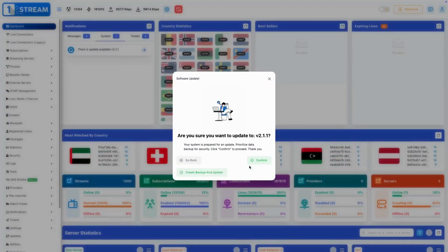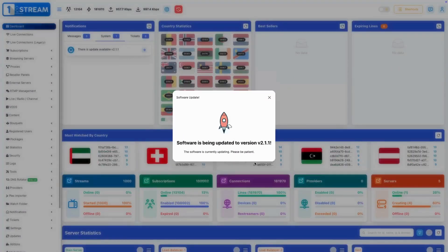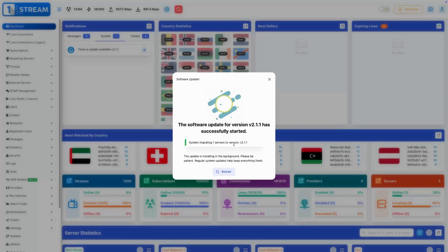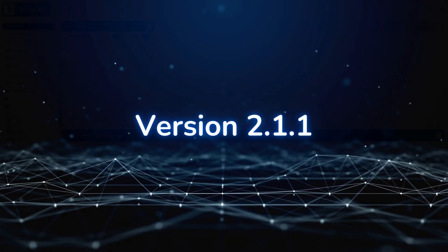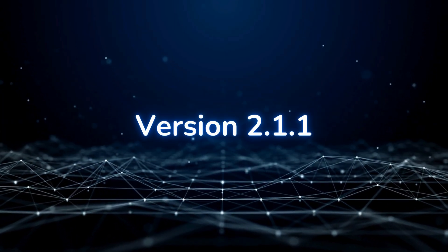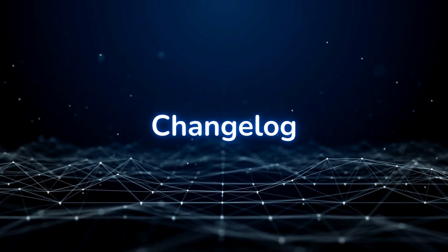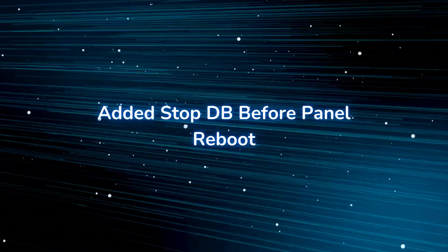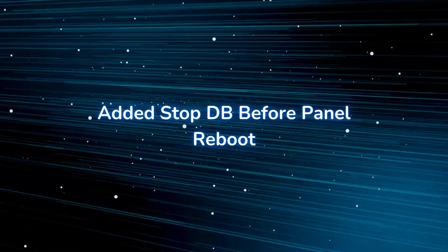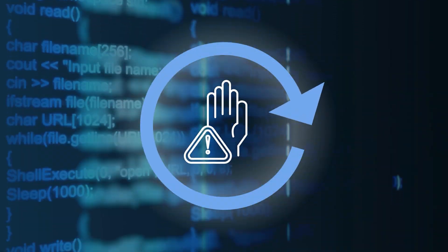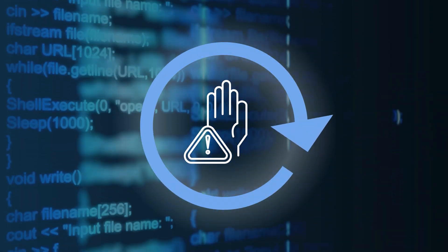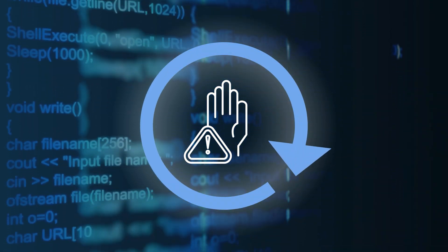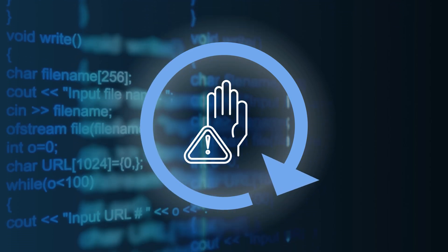Hello and welcome to this OneStream showcase tutorial. This time we are looking at stable version 2.1.1 changelog. Added stop to DB before panel reboot — this feature ensures that database operations are safely halted before a system reboot.